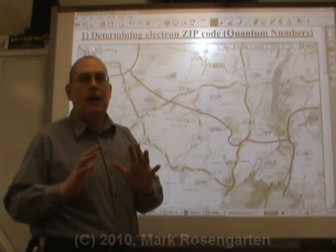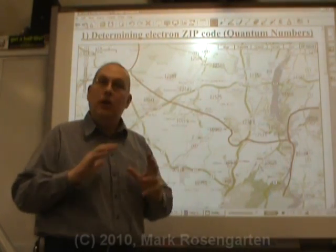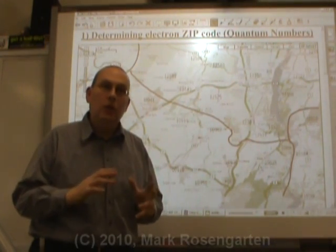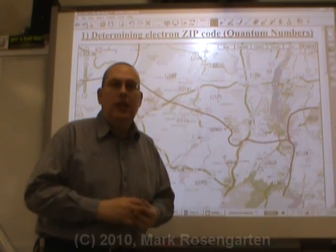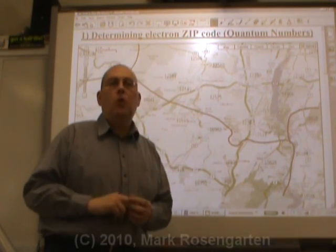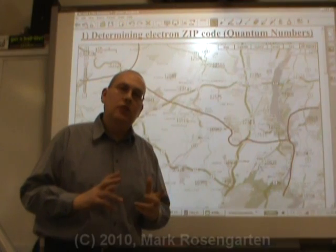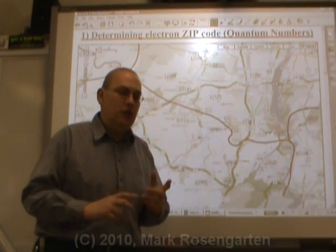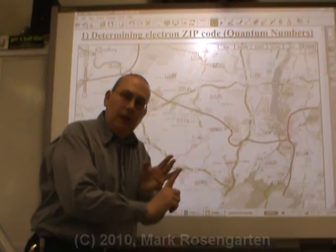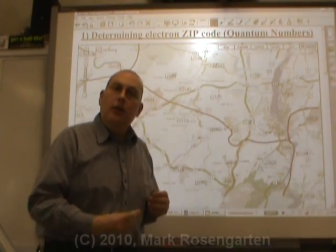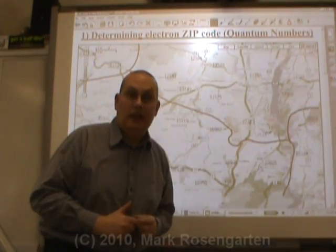Remember from the quantum mechanical model, we can't actually know exactly where an electron is located, but we can pinpoint its general location in space. That's what a quantum number is there to do — it gives you the position of the electron in terms of its energy level, sub-level, orbital, and whether it's an up-spin or a down-spin electron.